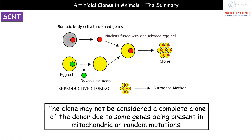This diagram helps visualise the process. We have our somatic body cell at the top, and we extract the nucleus from it. At the same time, we've got our egg cell — we extract and discard its nucleus, giving us our enucleated egg cell. The nucleus from our somatic body cell and the enucleated egg cell are placed together, fused through electrofusion, and then that will undergo normal cell division to produce our clone, before being inserted into the surrogate mother.